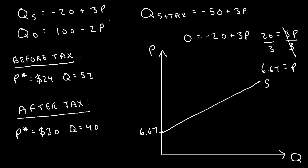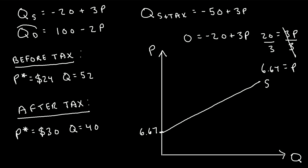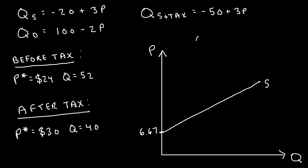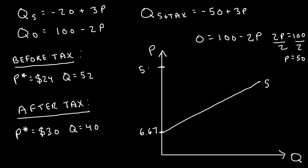We can also graph our demand curve in the same manner. Plugging in zero for quantity gives zero equals 100 minus 2p. Adding 2p to the left-hand side gives 2p equals 100, so p equals 50. The demand curve crosses the p-axis at 50 and slopes downward. This is our demand curve.